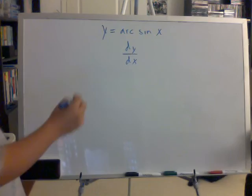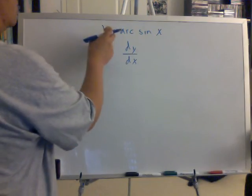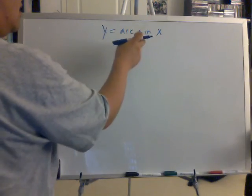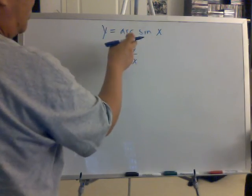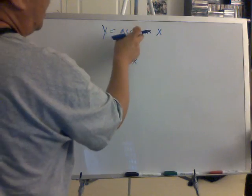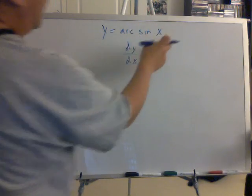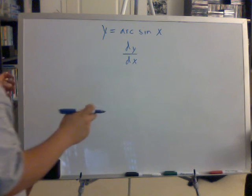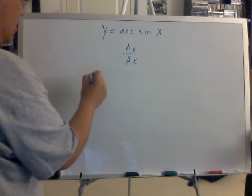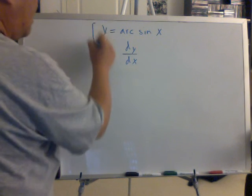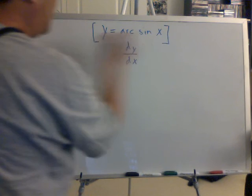Well, you can take the derivative with respect to x on both sides, but it will be somewhat hard to do because you don't know exactly how to do the derivative of arc sine of x. So the way you do it is you take the sine function on both sides.